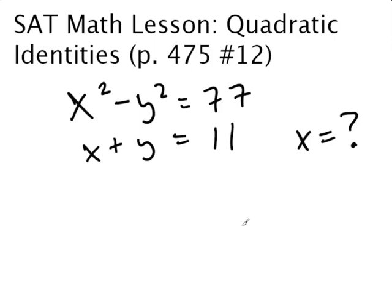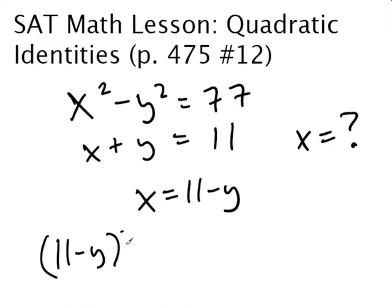Well, like most SAT questions, especially the math questions, there's always the hard way to do it, the math class way, and then there's the easier way to do it. The math class way would be to solve for x and then substitute. For example, x equals 11 minus y, and then rewrite this by saying 11 minus y squared minus y squared equals 77, and then solve for y and then solve for x. It's too much work. You don't need to do it this way.